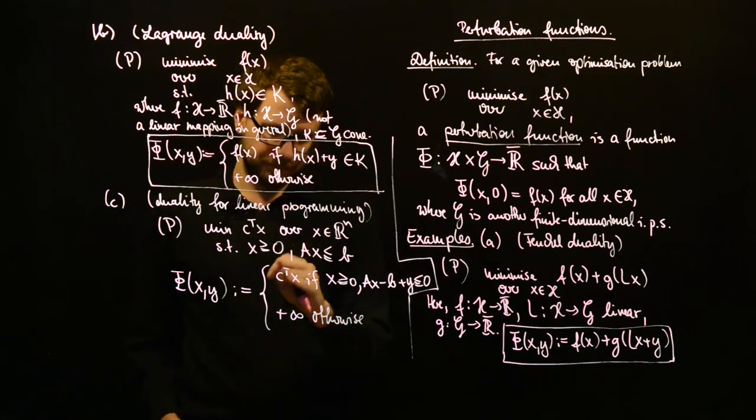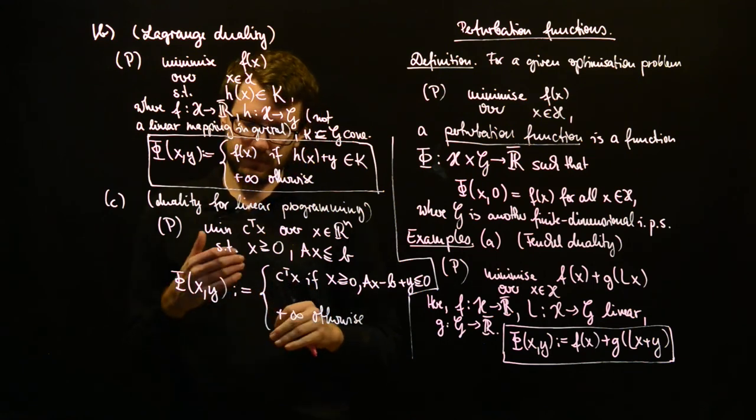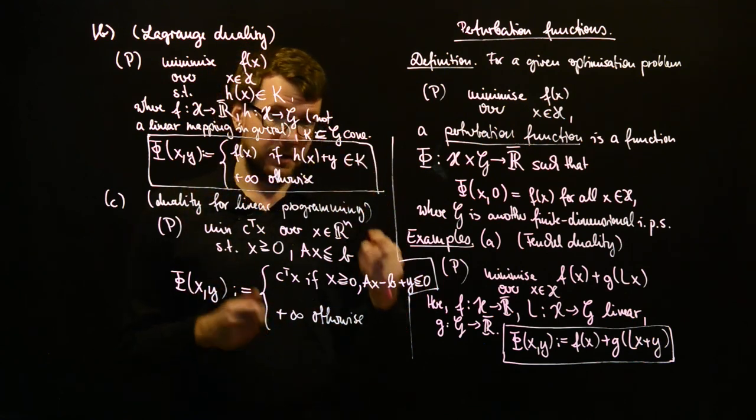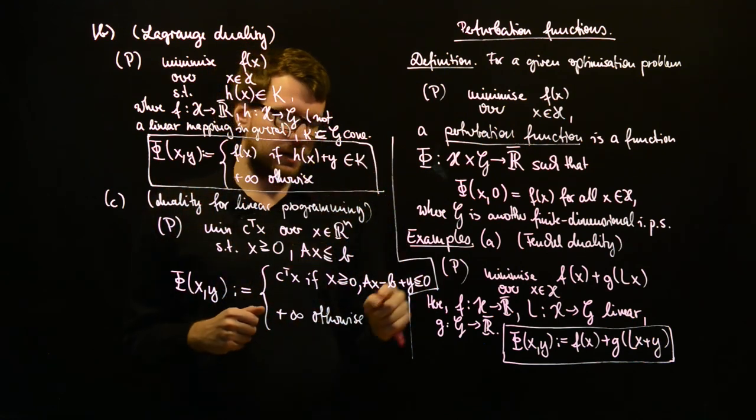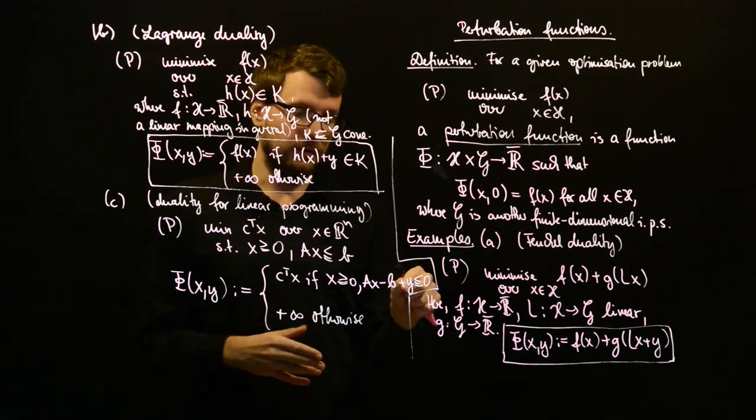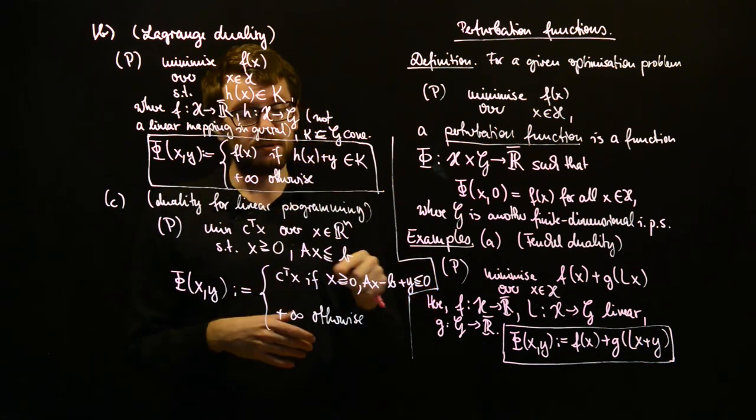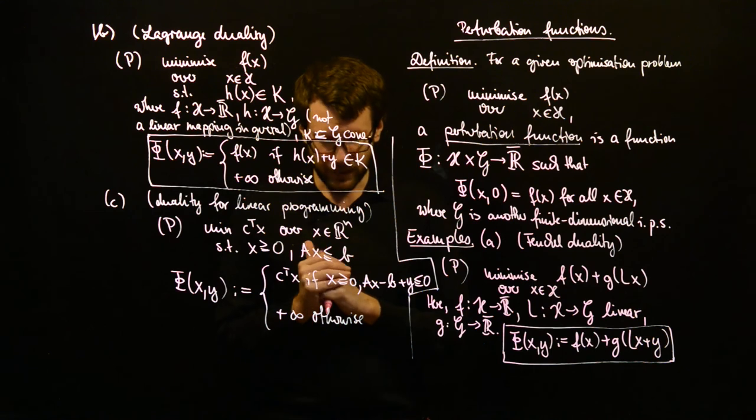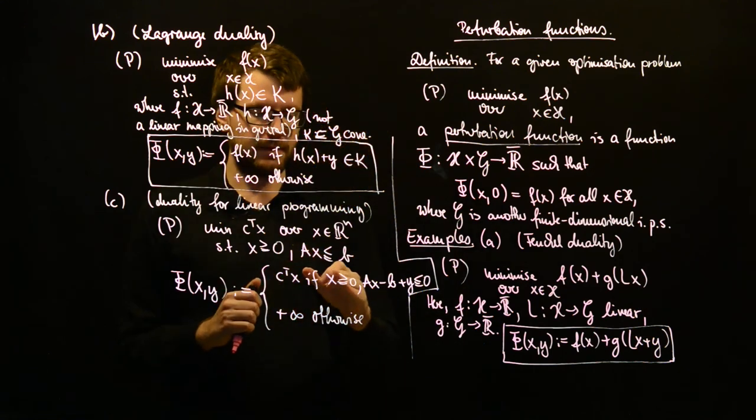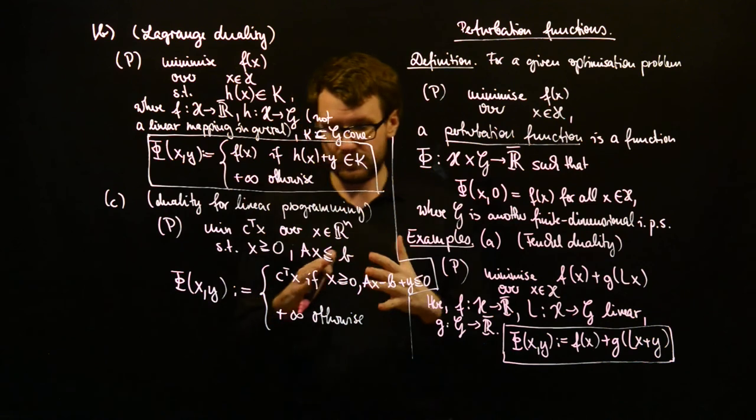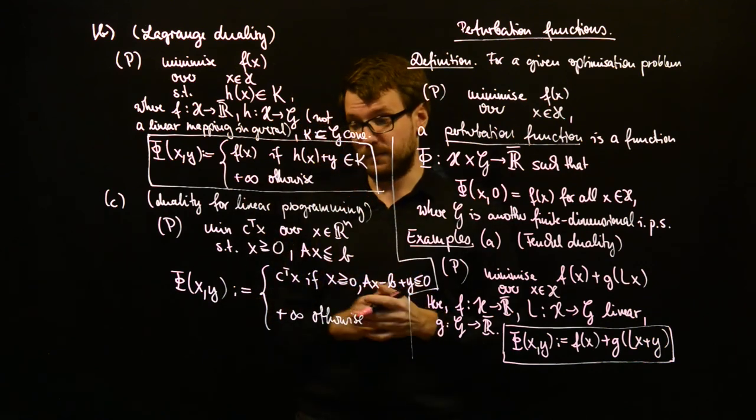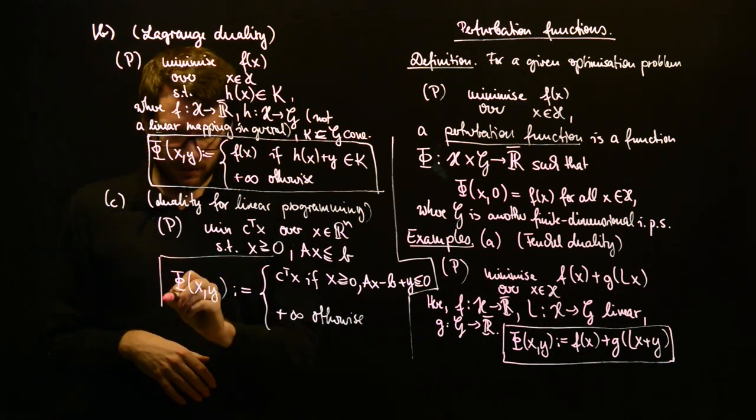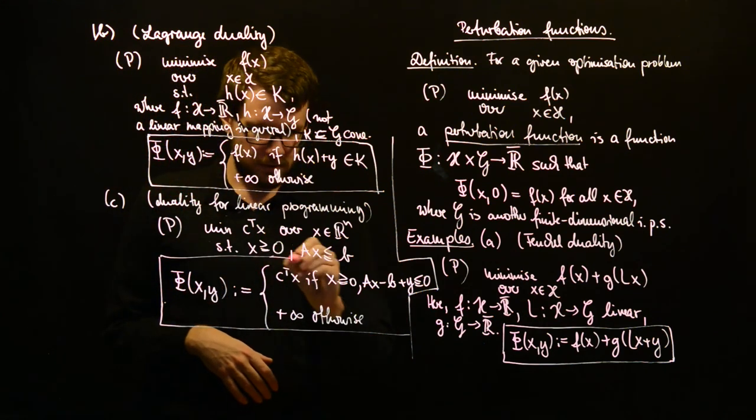And like this, you disturb your problem, analogously to the Lagrange duality by placing this y variable in these constraints which are determined by the linear operator A. And these x greater or equal than zero, this will not be disturbed. So, let's give this a box too.